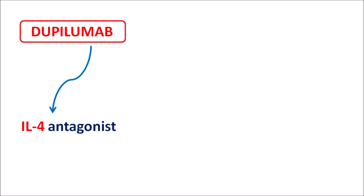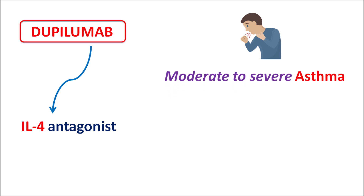Another clinical indication of dupilumab is again an allergic condition. This drug can be used to control moderate to severe asthma where other drugs are not useful to control the number of attacks. In such conditions, dupilumab can be given to reduce asthmatic attacks and improve the patient's lifestyle.